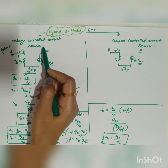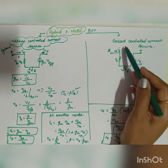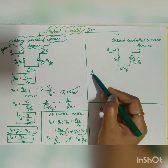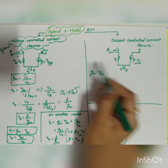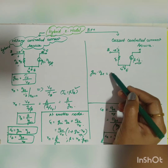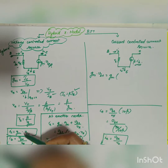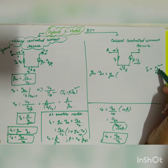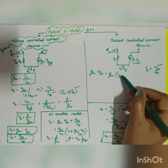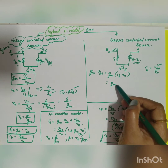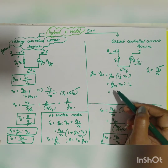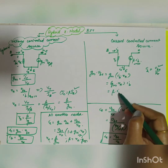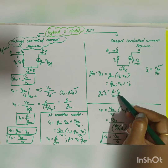For the current controlled current source, we need to show how gm×v_be becomes beta×ib. Since ib equals v_be/r_pi, we can write v_be equals r_pi×ib. Substituting: gm×v_be equals gm×r_pi×ib. Since gm×r_pi equals beta, this gives beta×ib — which is exactly the value used in the CCCS configuration.